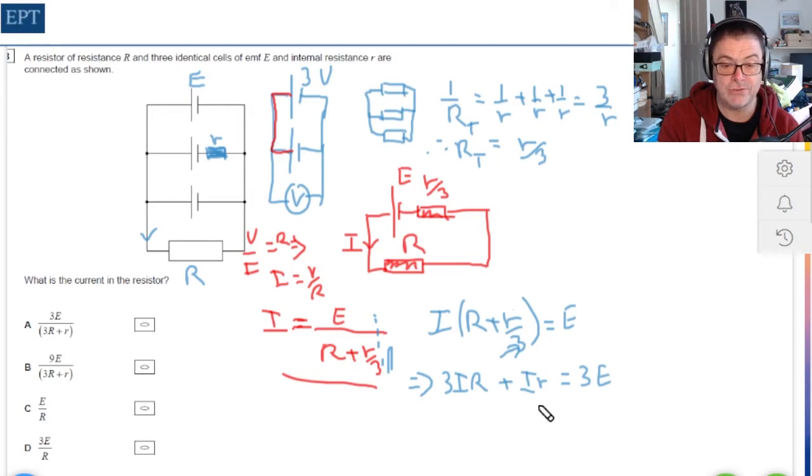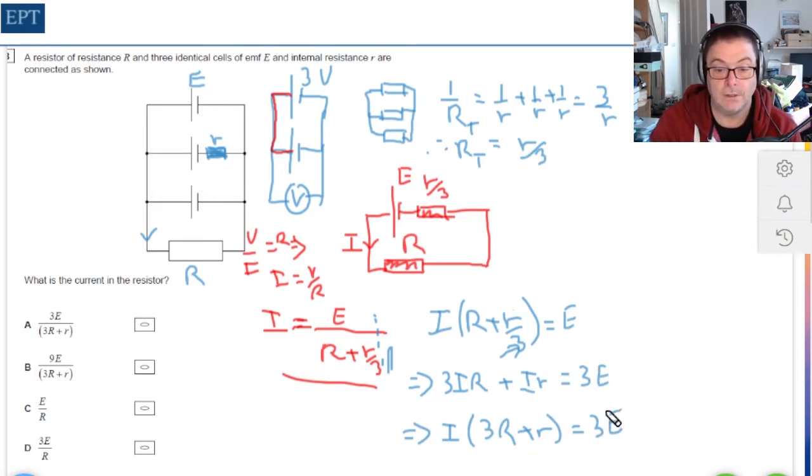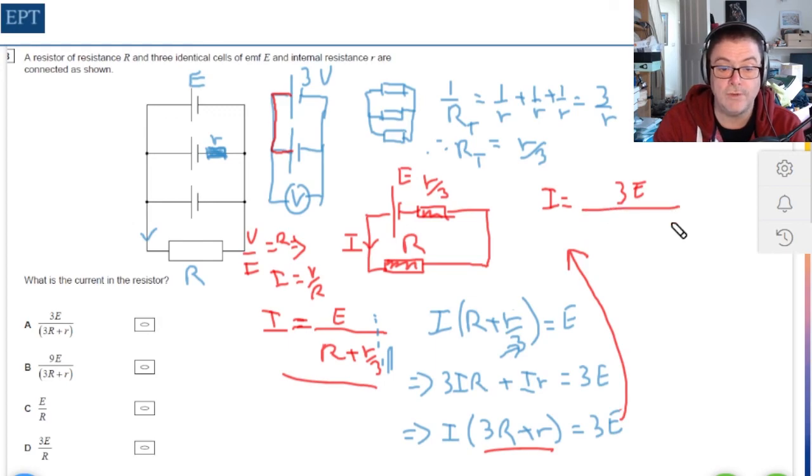Now going to factorize out the I from the left hand side, which means that we have I times (3R plus small r) equals 3E. All we need to do now is divide everything by what's in the bracket on the left hand side to give us what I equals. So I is going to be 3E all divided by (3 big R plus small r). Now that's looking very promising, and you can see that the answer is A.